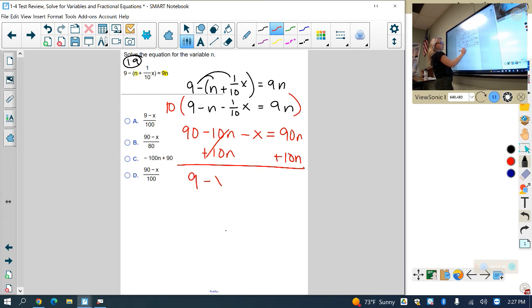So I have 90 minus x equals 90n plus 10n, which is actually 100n.